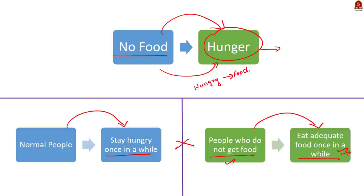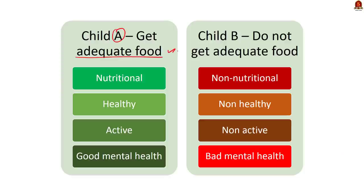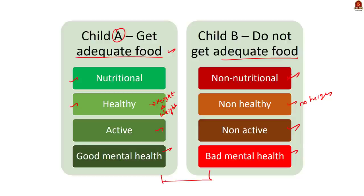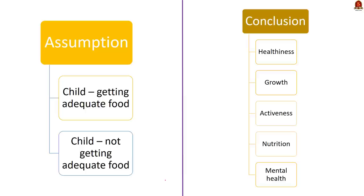Now, you have to use your imagination. Let us assume a child named A who has sufficient food supply from the day he was born. He will get his nutrition, grow to be a healthy person — reflected in height and weight — and will be active with good mental health. Now, let us assume another child named B who was not able to get adequate food from birth. He will not be healthy, will not attain the growth like child A, will not be active, and his mental health will also suffer. With this, we can arrive at the answer.